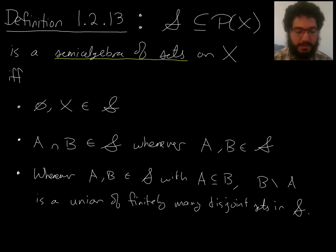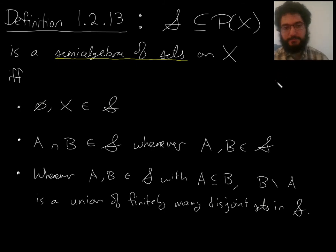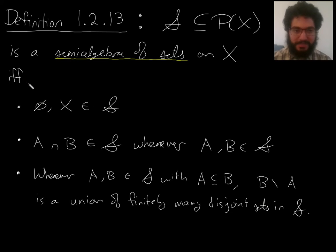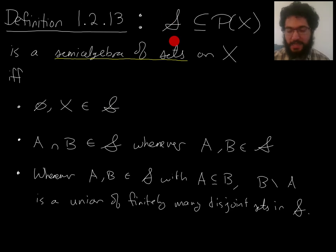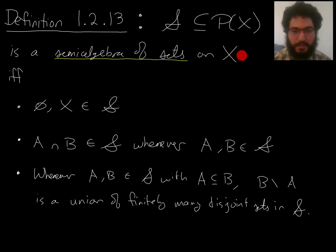Here's the definition. The definition is not just going to be the same as the definition of an algebra of sets but leaving out the unions part. I'm going to use fancy S rather than fancy A, just to highlight that this is not going to be closed under unions, typically, when we work with it. So take a collection of sets — subsets of X.